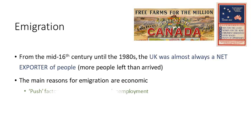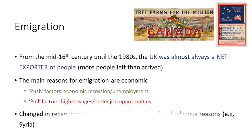In terms of emigration, an interesting fact is that from the mid-16th century until the 1980s, the UK was almost always a net exporter of people — meaning more people left than arrived. This has only very recently changed. The main reasons for emigration are generally economic in nature. Push factors are things that push someone out of their home country, such as economic recession, depression, or mass unemployment, causing someone to leave and work in a society not suffering from those economic ills.